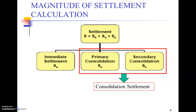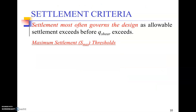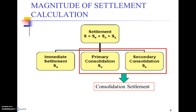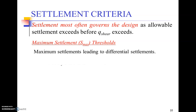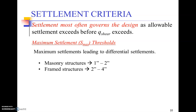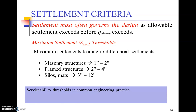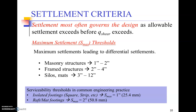Consolidation settlements, including primary and secondary, have been covered in Geotechnical Engineering 1, so we will mostly focus on immediate settlements with a brief preview of consolidation. The most commonly used design criterion is that allowable settlement must be exceeded before shear strength is exceeded — meaning settlement is imminent before shear failure. Maximum settlement thresholds are: one to two inches for machinery structures; two to four inches for frame structures; and three to twelve inches for silos and mats.